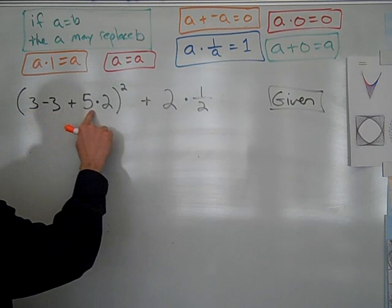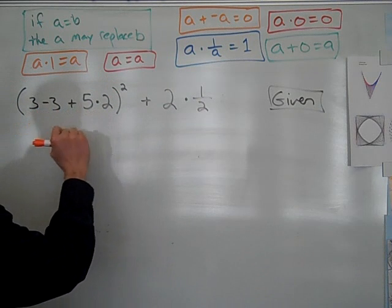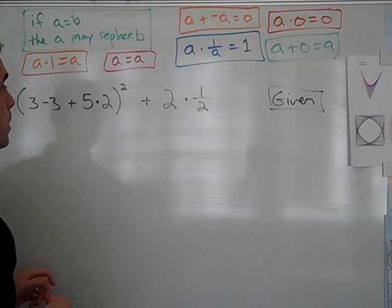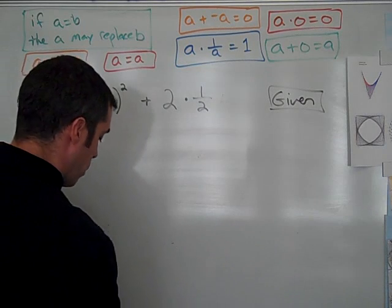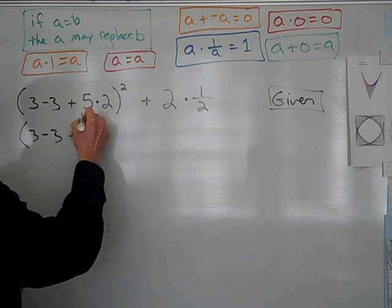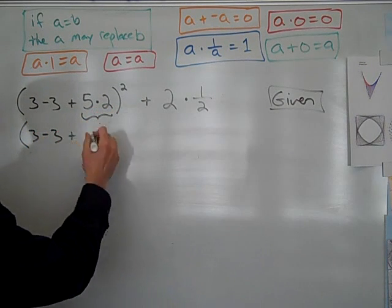And as I look inside the parentheses, I see the first operation that is to be performed by order of operations is multiplication, 5 times 2. So I will go ahead and rewrite the entire expression, except that I'll evaluate 5 times 2.